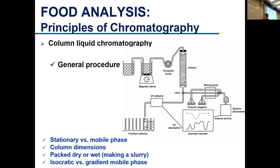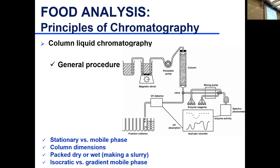This brings us to an important concept: isocratic versus gradient elution. Isocratic means there is no change in your mobile phase — the mobile phase remains the same throughout the entire run. You have one solvent pumped into the column at constant concentration throughout, separating your compounds without changing mobile phase composition over time. This is often used in size exclusion chromatography.